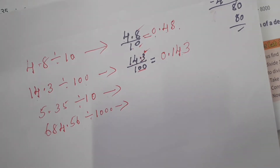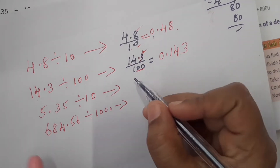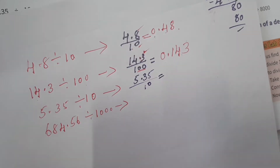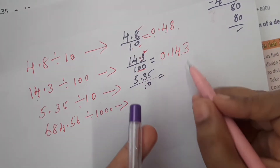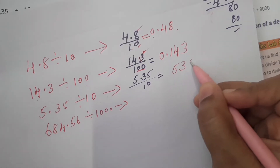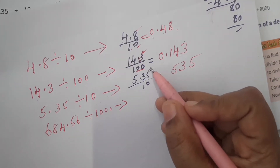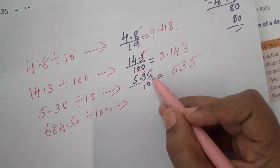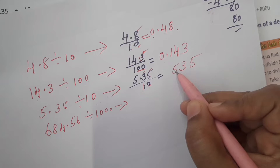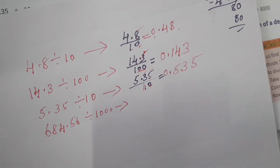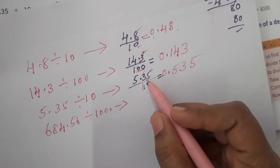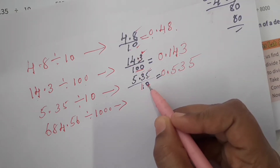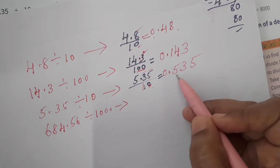5.35 divided by 10. Write the numerator as 535 — ignoring the decimal point. After the decimal point there are 2 numbers, and the divisor 10 has 1 zero. So total count is 1, 2, 3 — three digits from the right. Place the decimal point after 3 digits. The answer is 0.535.